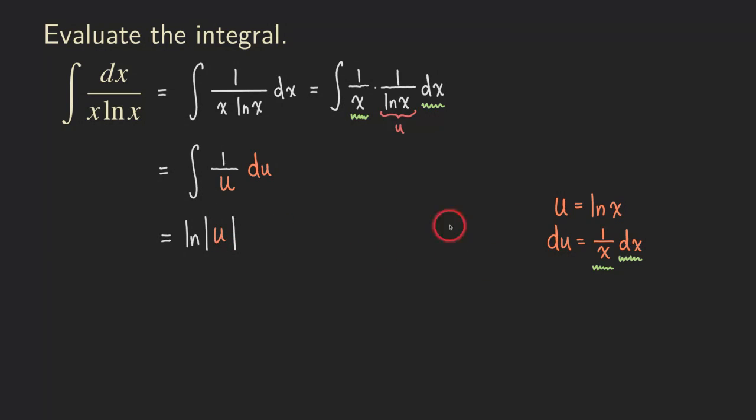And then we're basically done. But at this point, I should substitute the u back, the ln of x back into this u so that I will have a function that's in terms of x. And of course, there's also a plus C. So we have ln of the absolute value of ln of x plus C.